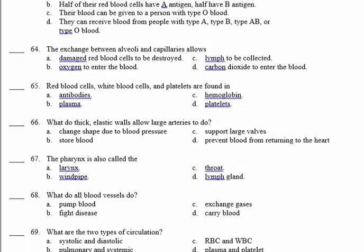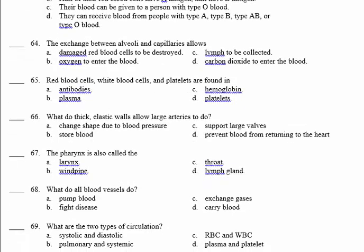What do thick elastic walls allow large arteries to do? The arteries have thicker walls than the veins because the arteries carry blood away from the heart and the blood coming from the heart is under high pressure. They change shape due to blood pressure. 66, A.